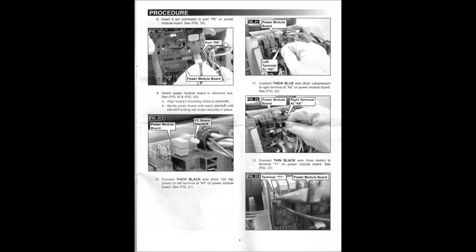Then you're going to connect the thick black wire to the left terminal K5 just like the picture shows. I would definitely reference the picture on that one. Left terminal at K5. And then you're going to do the thick blue wire to the right terminal at K6 on the power module board.